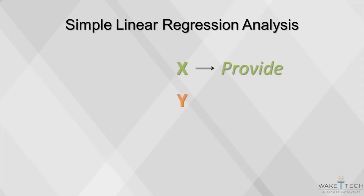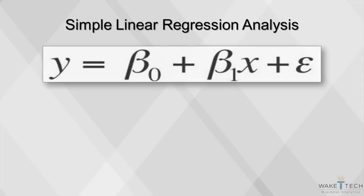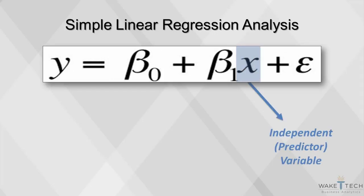We provide the independent variable x and we observe the dependent variable y. The linear regression equation is shown here. The variable x is considered the independent or predictor variable. The variable y is the dependent or outcome variable. We have data on both x and y.